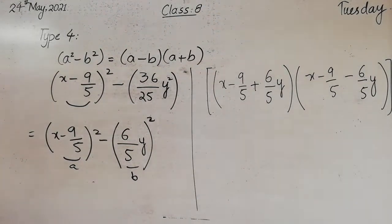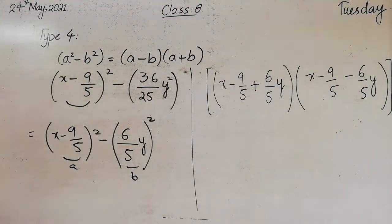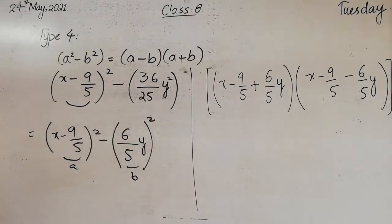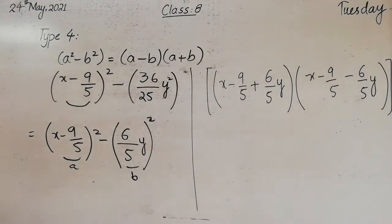Let's recap what we did. We had x minus 9 by 5 whole square, minus 36 over 25 y square. First we completed the squares. x minus 9 by 5 was already in whole square form. For the second term, 36 over 25 y square, we wrote it as 6 over 5 y, whole square — since 36 is the square of 6 and 25 is the square of 5. Now A and B terms are identified, and we applied the formula: a square minus b square equals a minus b into a plus b.